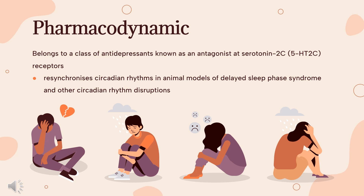Pharmacodynamics: Agomelatine resynchronizes circadian rhythms in animal models of delayed sleep phase syndrome and other circadian rhythm disruptions. It increases noradrenaline and dopamine release specifically in the frontal cortex and has no influence on the extracellular levels of serotonin. Agomelatine has shown an antidepressant-like effect in animal depression models including the learned helplessness test, despair test, chronic mild stress, circadian rhythm desynchronization, and in stress and anxiety models. In humans, agomelatine has positive phase-shifting properties — it induces a phase advance of body temperature decline and melatonin onset.